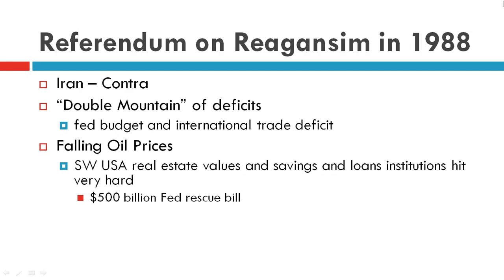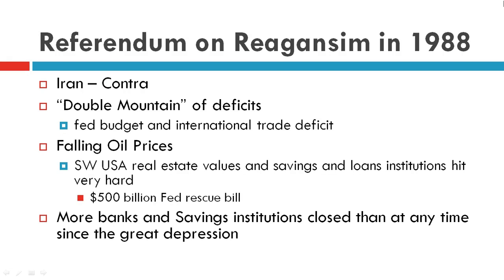There were also falling oil prices in the Southwest USA. Real estate values and savings and loan institutions were hit very hard, and $500 billion in federal money was used to rescue that region.